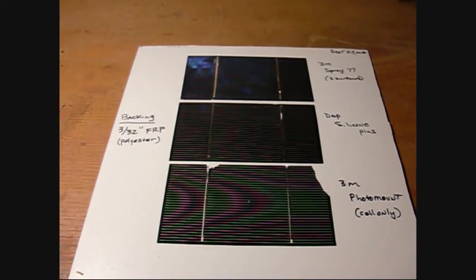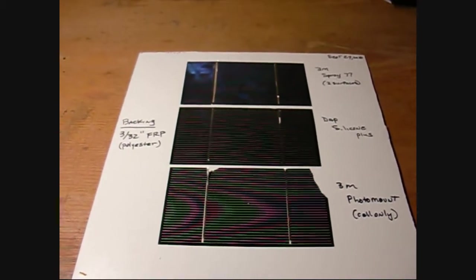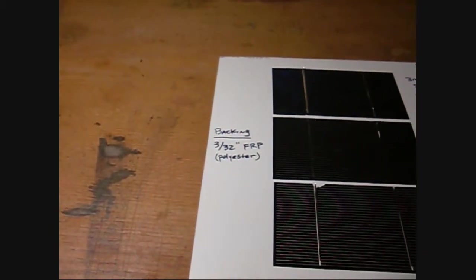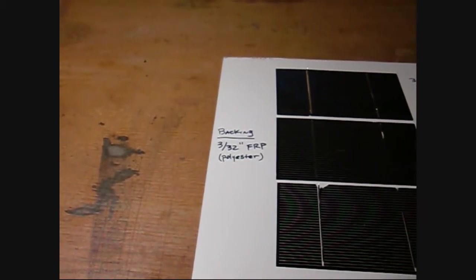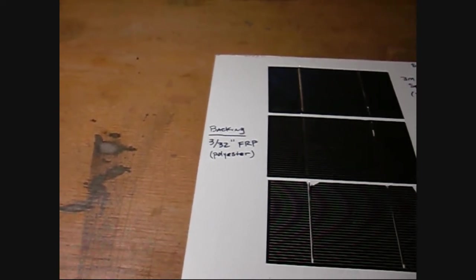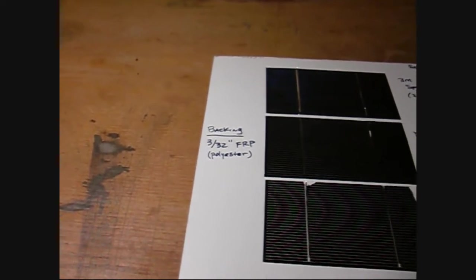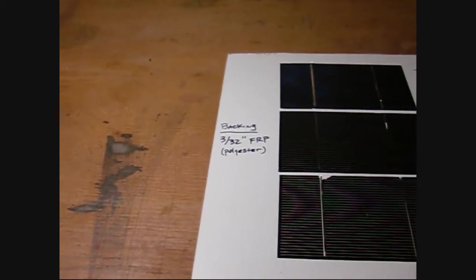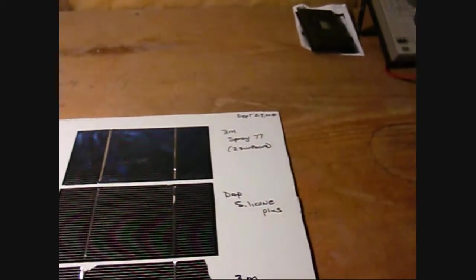Just to refresh, this is the backing material. It's 3/32 inch polyester fiberglass reinforced plastic that you can get at most home centers. It's UV stabilized so it should work okay outside under glass.